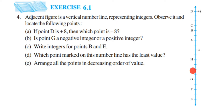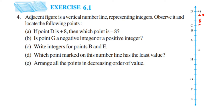The first question is: if point D is plus 8, then which point is minus 8? We can see they have given different alphabets on the number line and we don't know which alphabet corresponds to which integer, but we know D is plus 8. So let's write down the numbers first — if this is plus 8, this will be plus 7, then 6, 5, 4, 3, 2, 1.